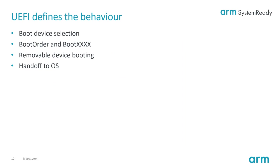UEFI also defines behavior — things like boot device selection. How do you choose between devices? If you don't have any defined boot devices, it has a scheme for looking on a filesystem to find a system partition and the removable boot path on that device, and if found, run it. It defines the boot order and boot number variables — there's one variable for each possible boot target, and the boot order variable tells you which one to boot next. With the behavior UEFI defines, the platform behaves predictably. An OS, when deploying to the platform, can control what's going to be booted next without worrying about scripts or variables other than the well-defined UEFI ones.